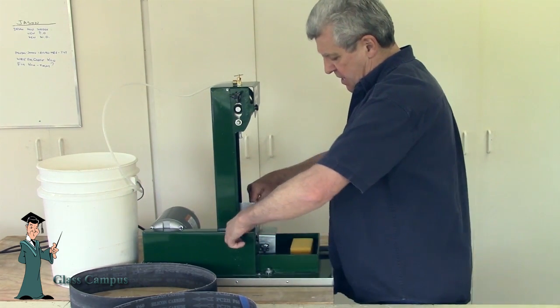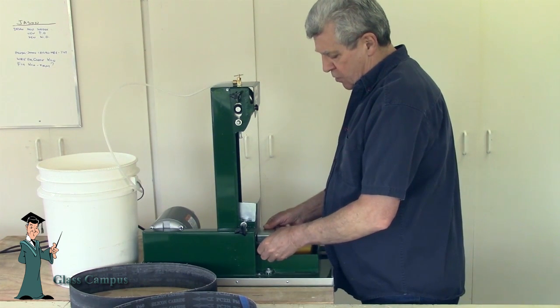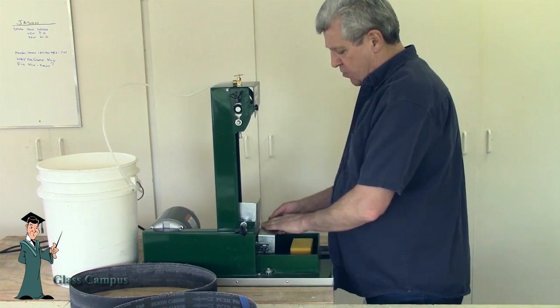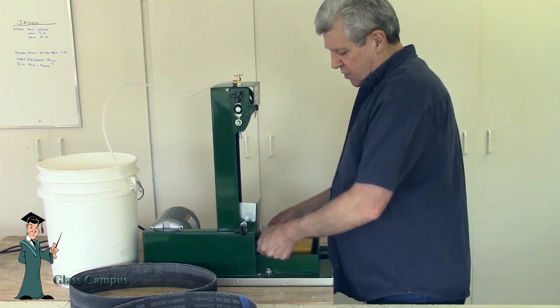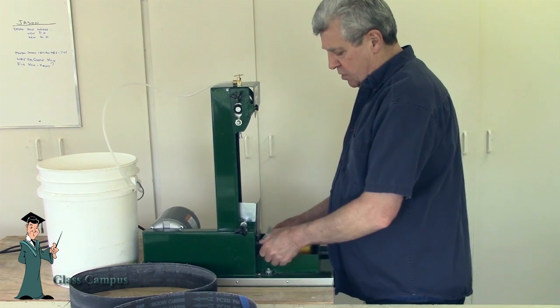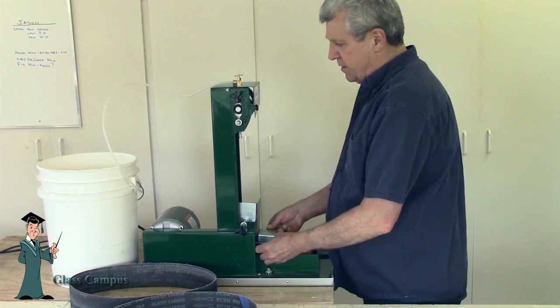The guide plate also can be removed or adjusted. If you put it on straight, slide the glass across it. It'll sit squarely against the belt, or if you wish, you could turn it and adjust it so that the glass will grind on an angle on the belt. You may want to put a 45 degree bevel on it.